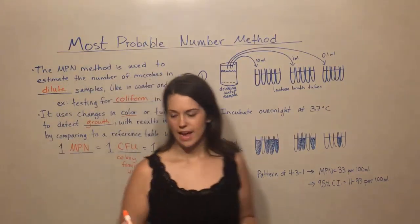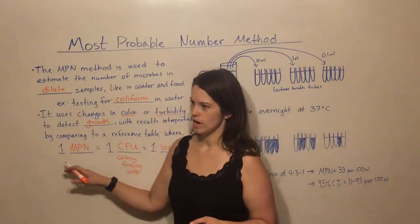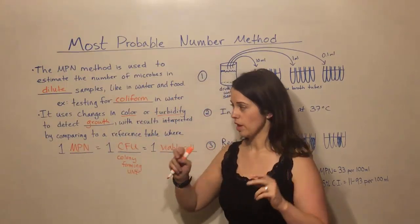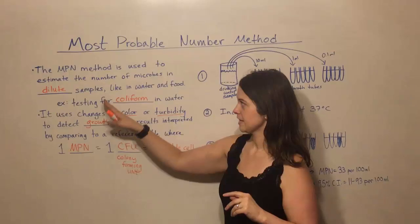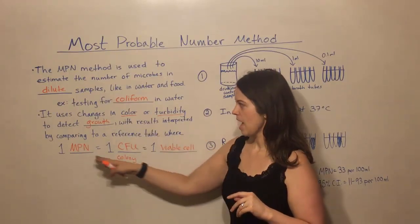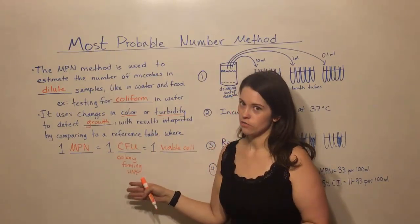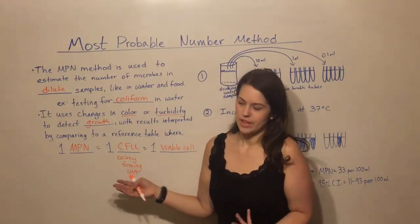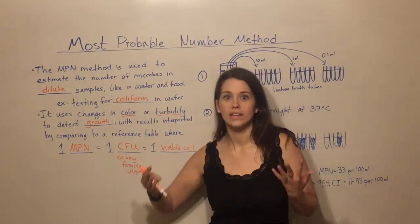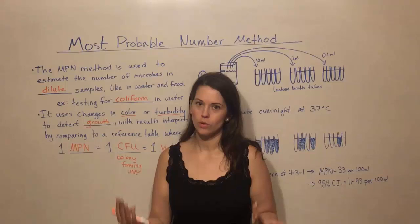So just to recap, this method gives you a number, a most probable number for how many bacteria are in a certain sample. And that equates to one colony forming unit, which is the same thing as saying one viable cell. So one living cell, one cell that's capable of reproducing.